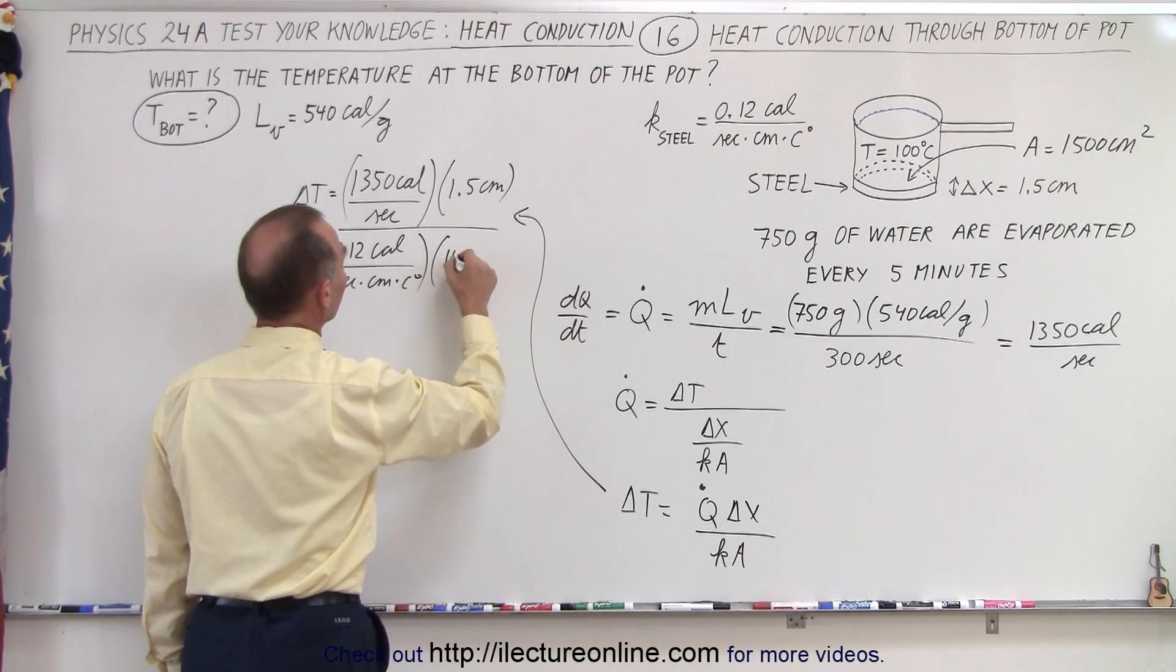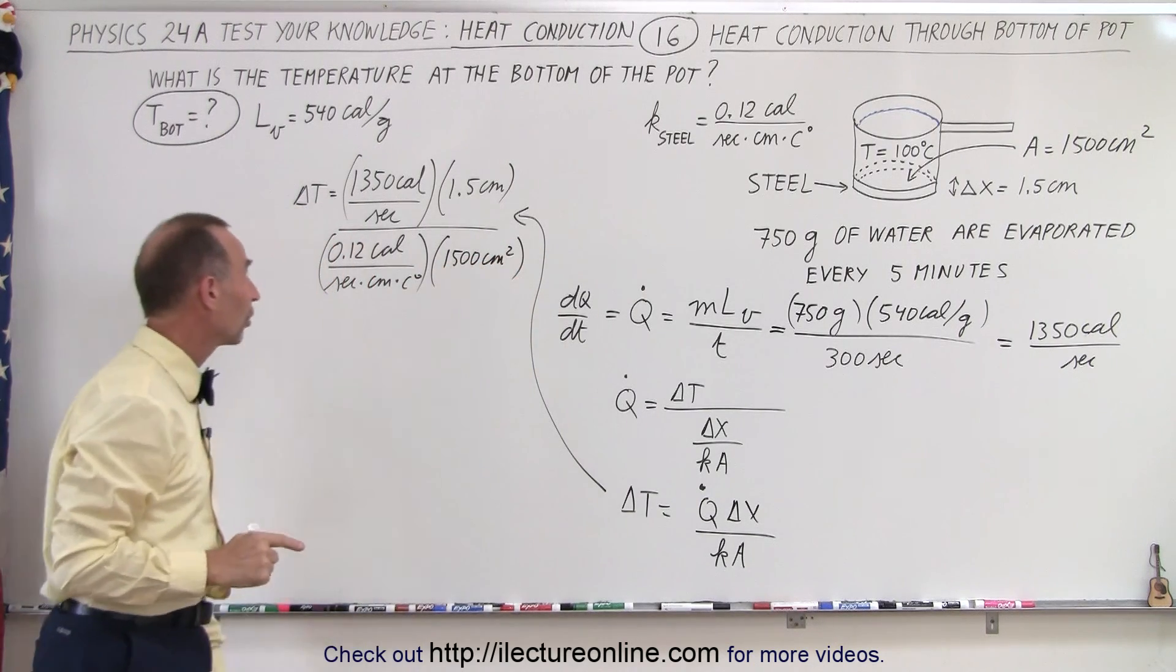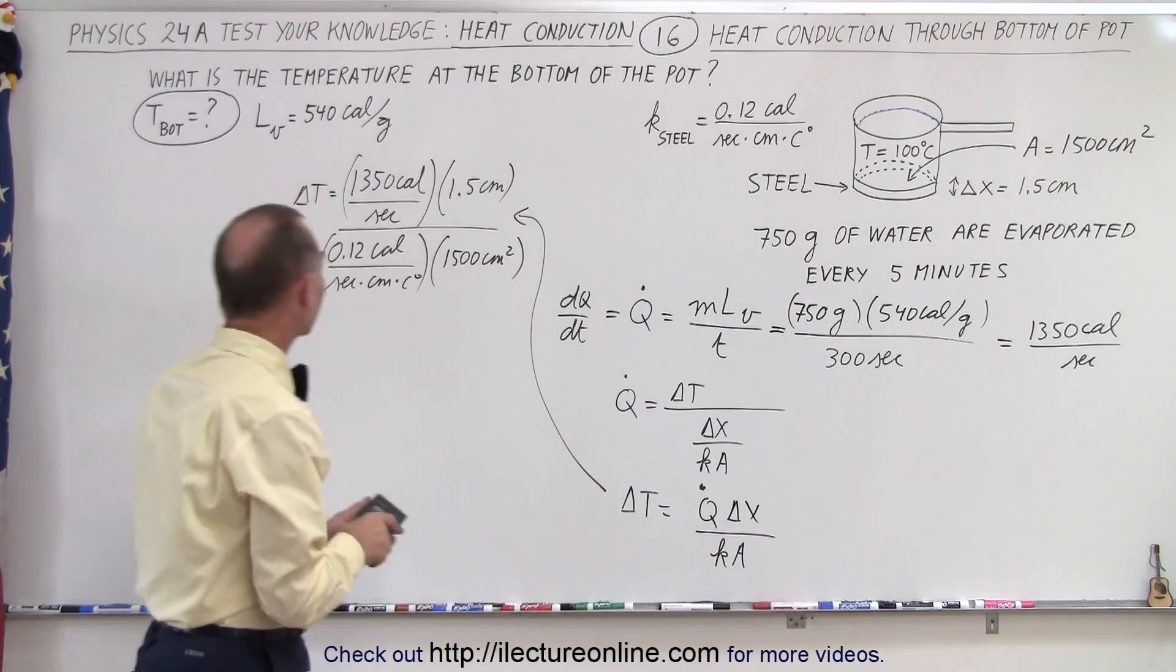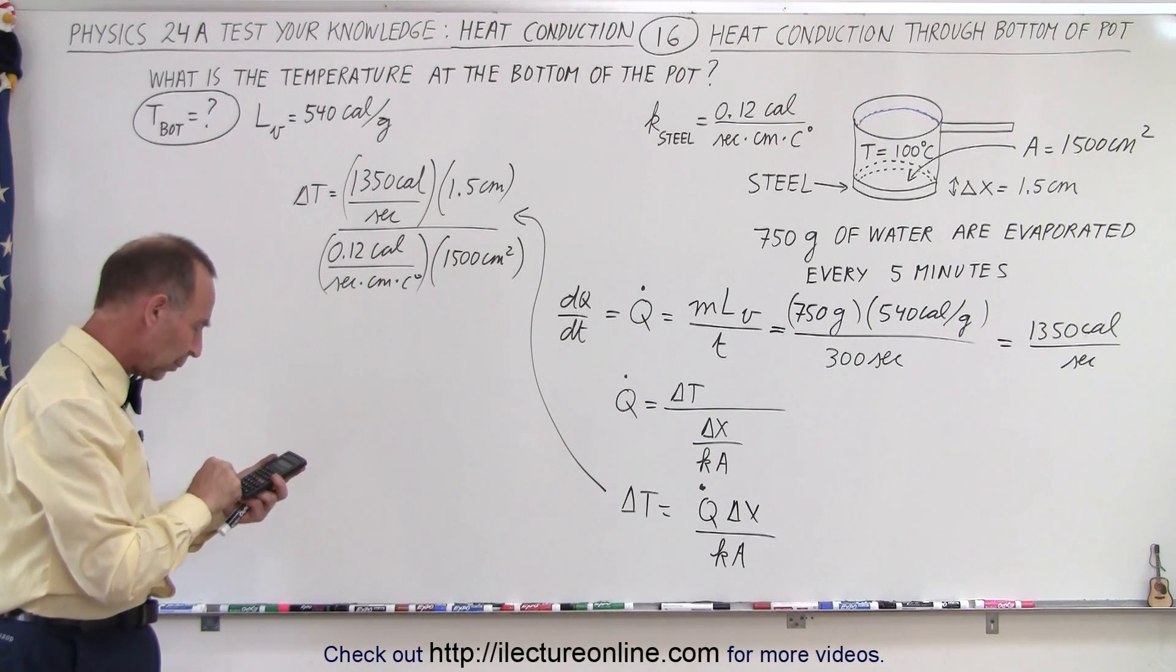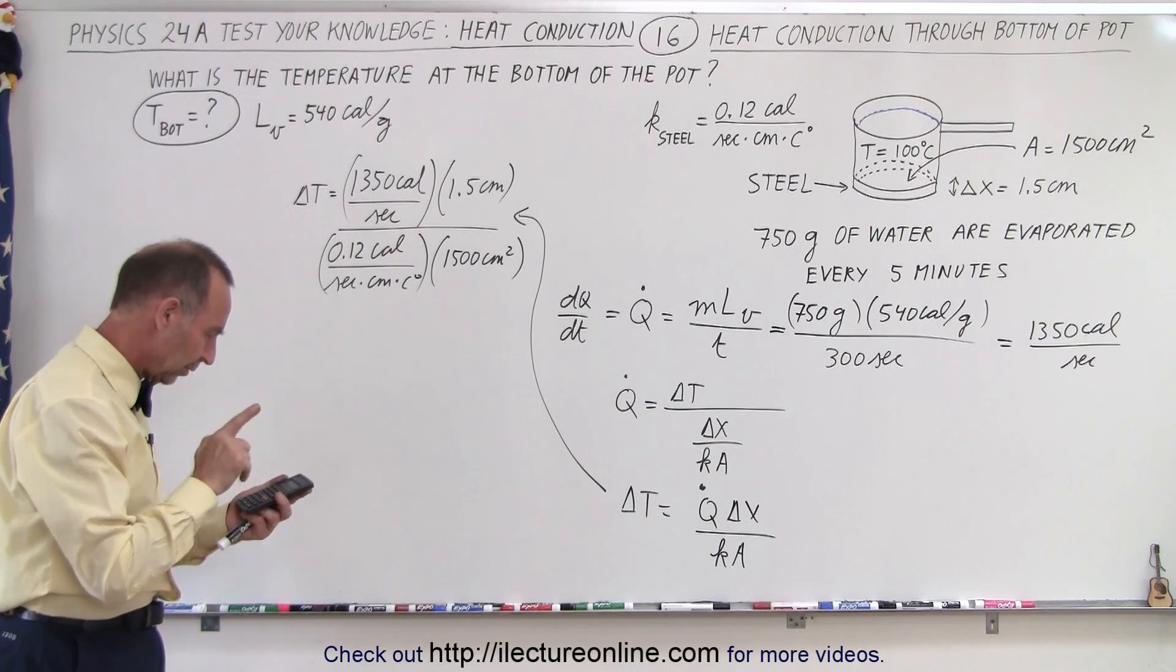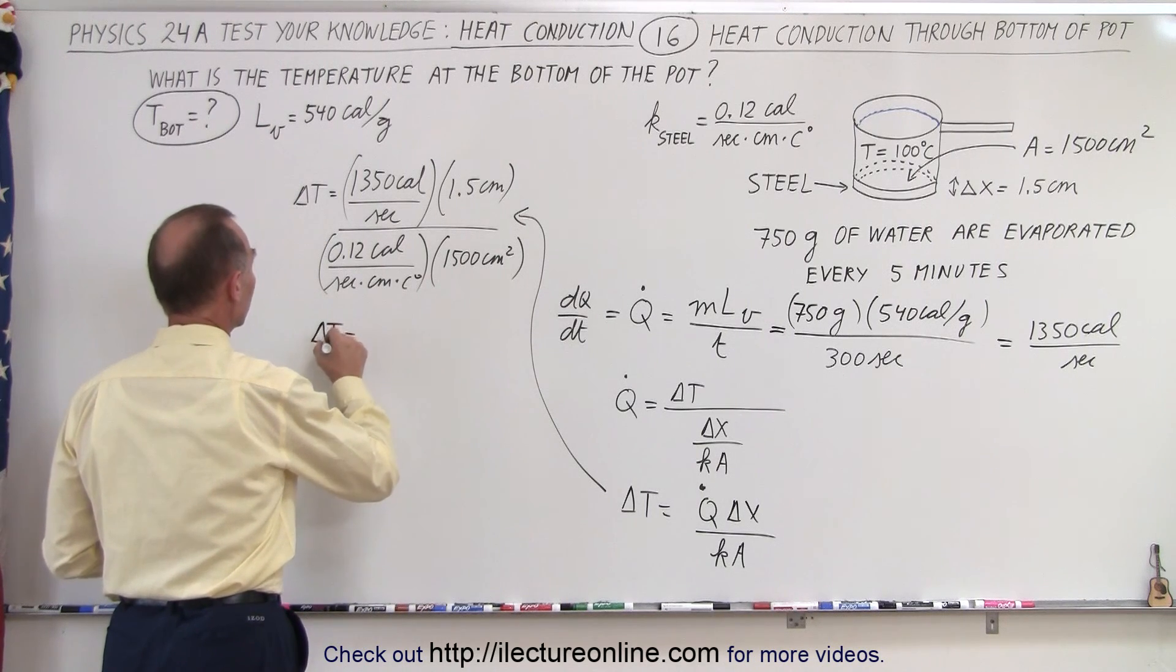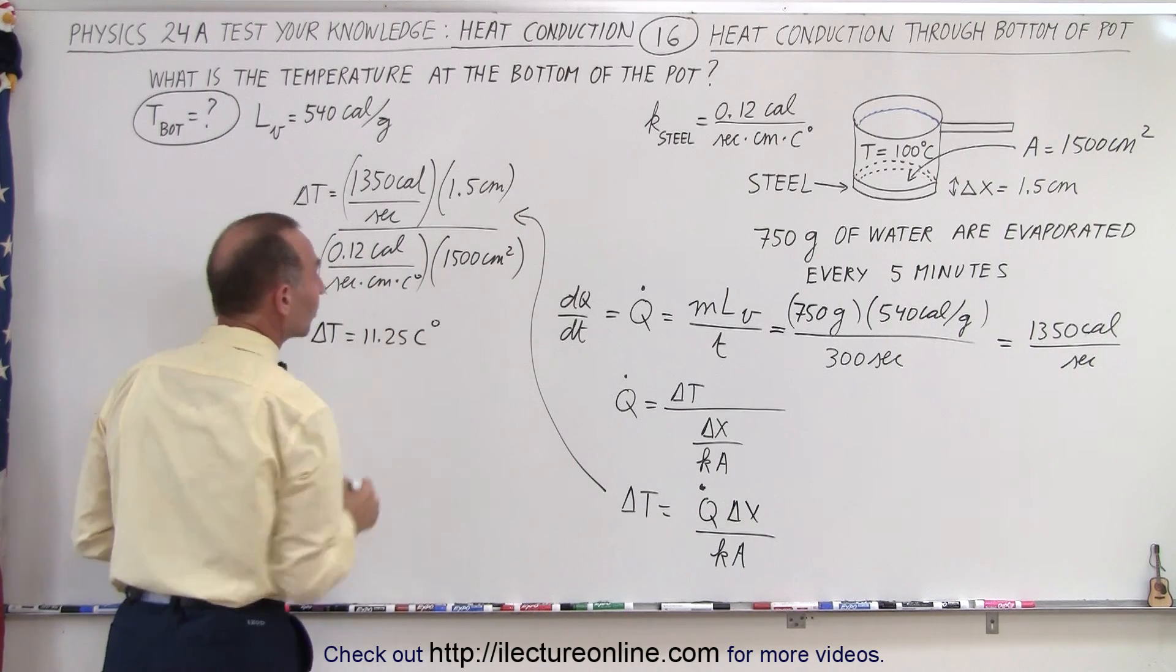And so the difference is going to be in terms of centigrade degrees. So now we need a calculator. So we get 1350 times 1.5 divided by 0.12 and divided by 1500 equals, and I get 11.25. So delta t is equal to 11.25 centigrade degrees.